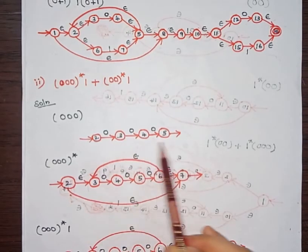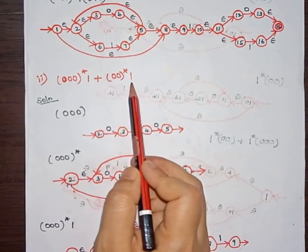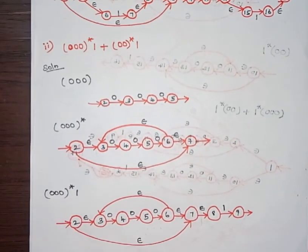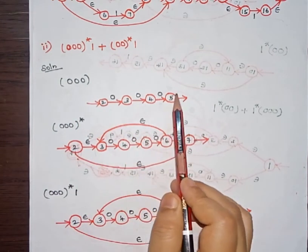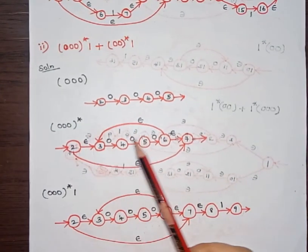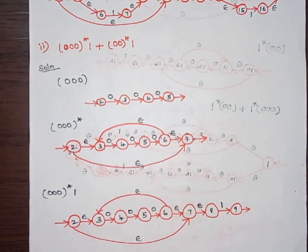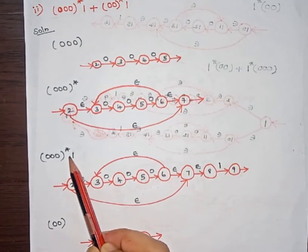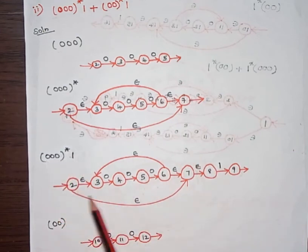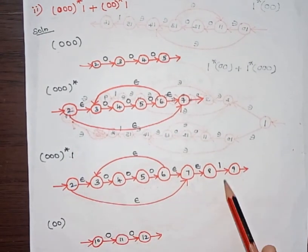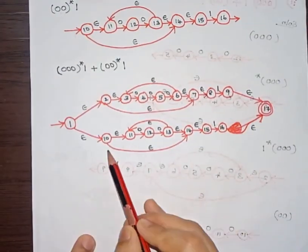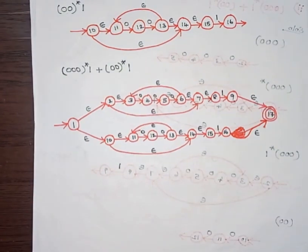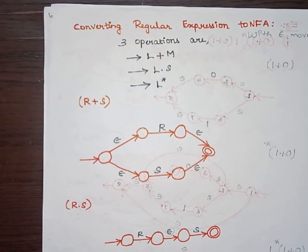In the same way, here we are constructing the NFA for another given regular expression. We can see the concatenation of 0, 0, 0. This is how we represent the NFA for the concatenation 0·0·0. After that we have closure, so we add the closure for that. Then 1 is concatenated with this (000)* part. Along with this, we concatenate the input symbol 1. Like that, we construct the final NFA for this input. This is how we can convert a given regular expression into an NFA.